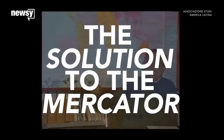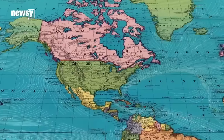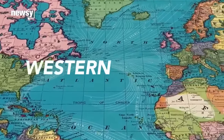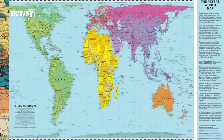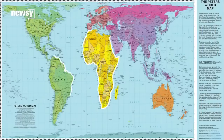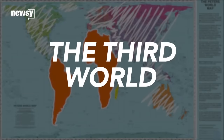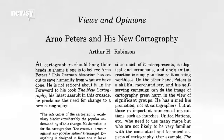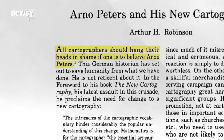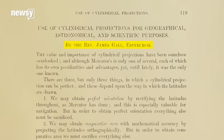Eventually, a German historian created what he said was a revolutionary map projection that he marketed as the solution to the Mercator. For Arno Peters, the Mercator represented Western imperialism. His new projection, with a more prominent Africa and South America, was meant to emphasize what he called the Third World. Reactions ranged from cautious amusement to outright hostility. Peters had trashed the cartographic community in writings promoting his map, and his version really wasn't even that original.